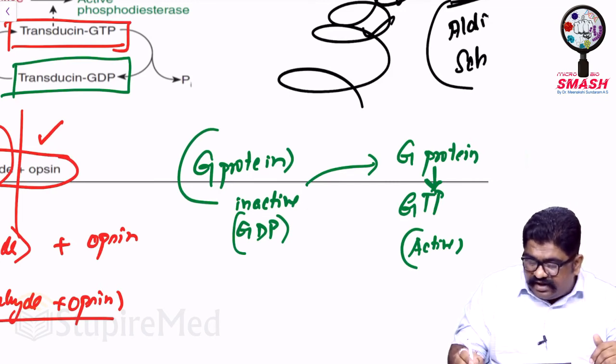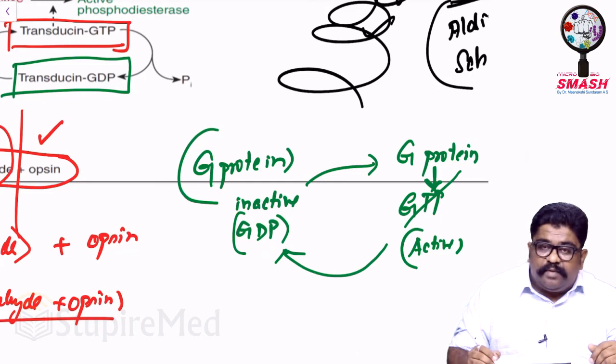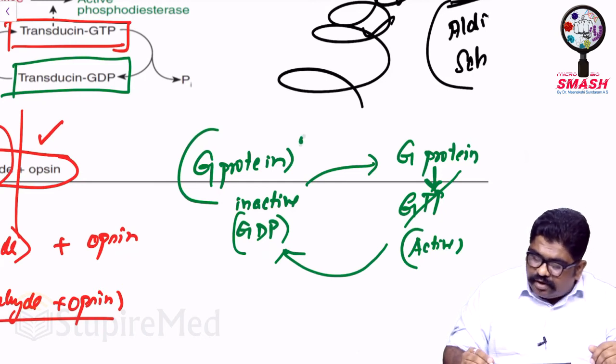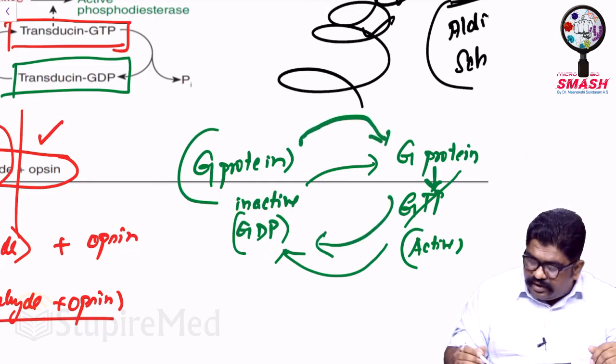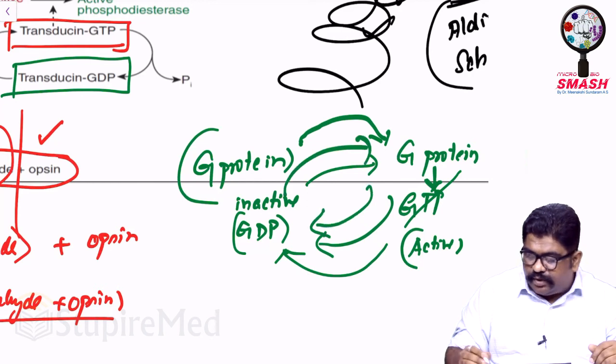So when the G protein is bound to GTP, it is active. And when it is getting dephosphorylated, that is with the help of a phosphatase activity, if the GTP breaks and goes back to GDP, it can become inactive. So this is a continuous cycle of inactive to active, active to inactive. That is the beauty of any kind of G protein.